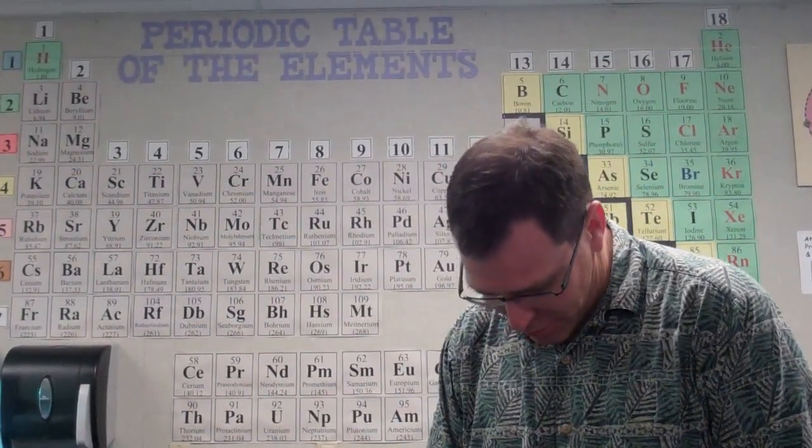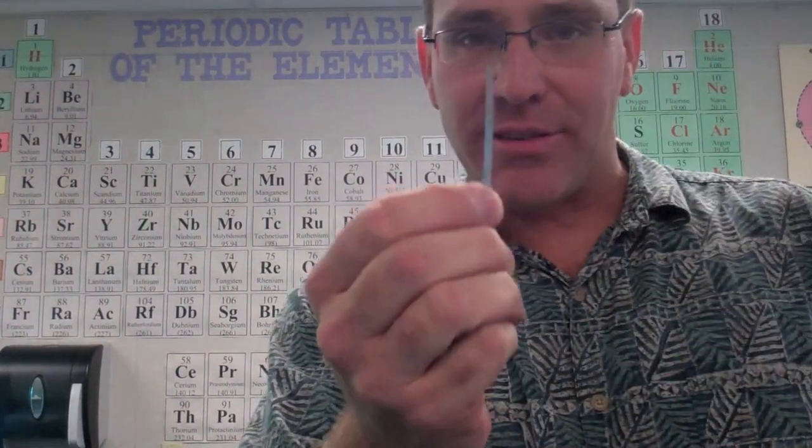And right here I do have a piece of magnesium. You can actually look at some of the properties. As you can see, it's a metal. It's shiny. It's malleable. I can totally bend it. And ductile. That's why it got strung out in this nice little flat shape.